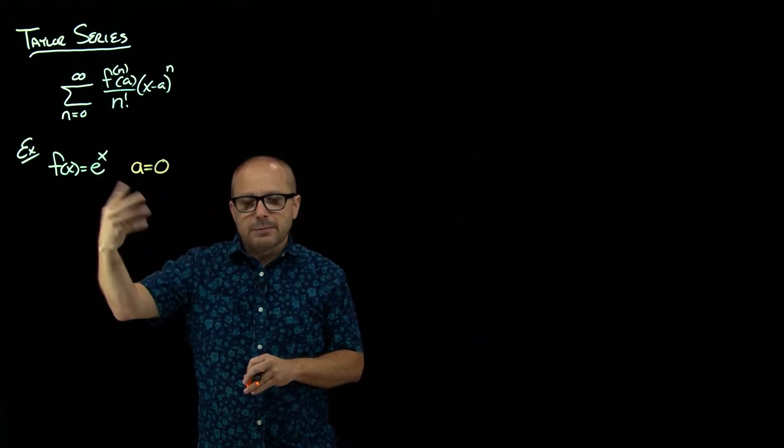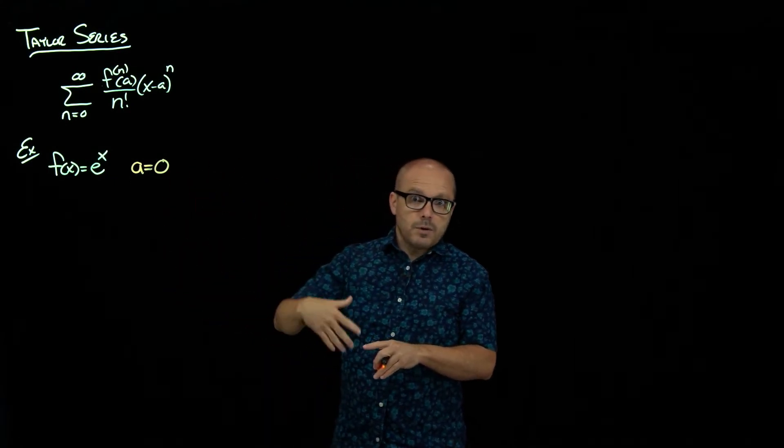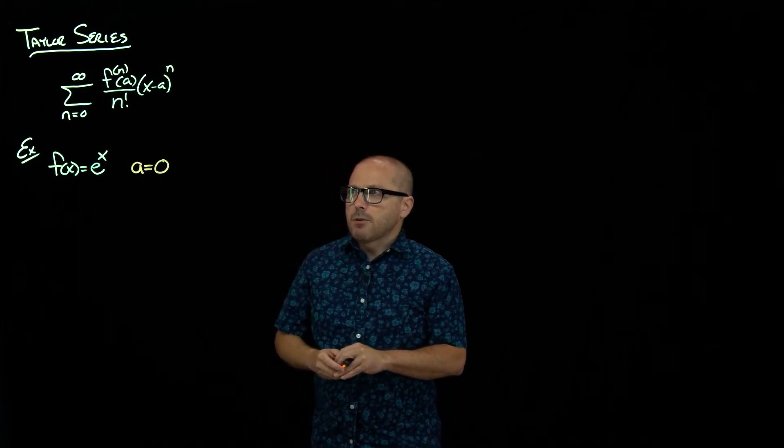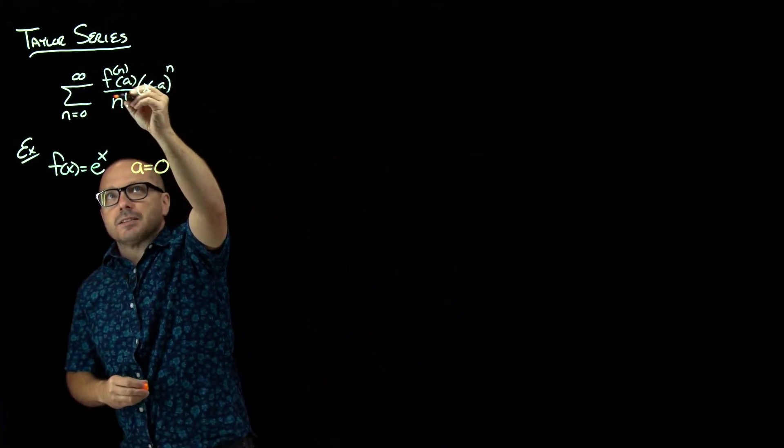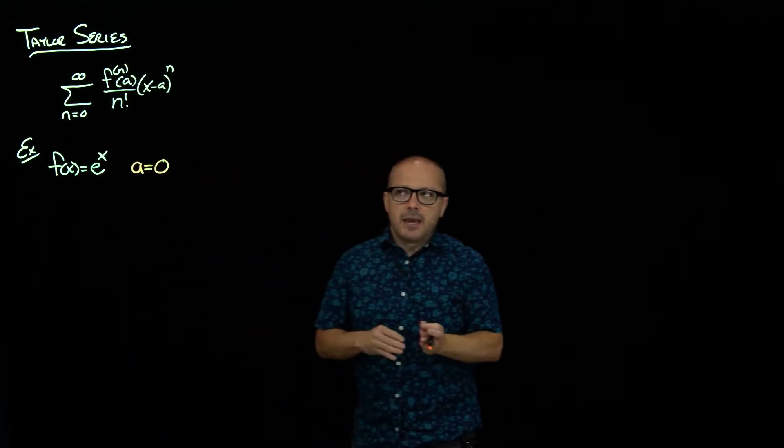I mean, if I plug in 1, that's e, but what is e but this limit? And I don't want to have a whole bunch of limits within this series. Now what we need to do is figure out this: what does the nth derivative of that function look like at 0?